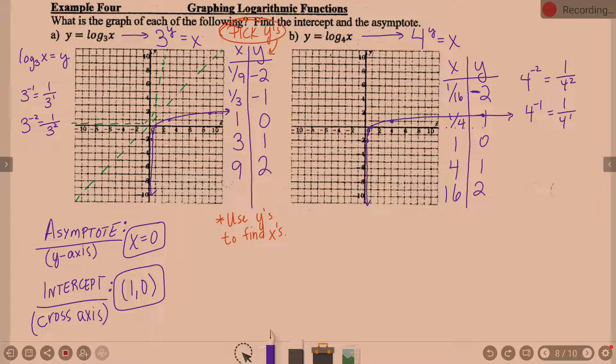What about the asymptote? It's still the y-axis, still x equals 0. What about any intercepts? We still cross the x-axis at 1, so 1 comma 0. I'm not going to write that information down again. It didn't change. And it's not going to change unless your graph is shifted or something.